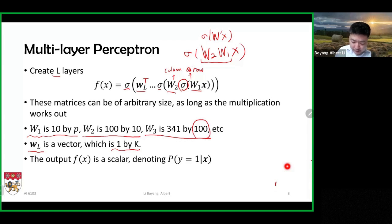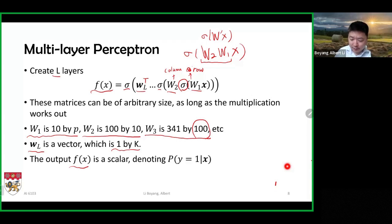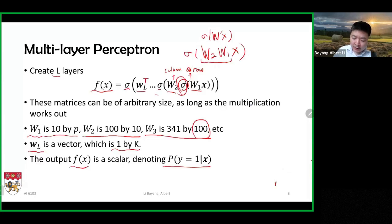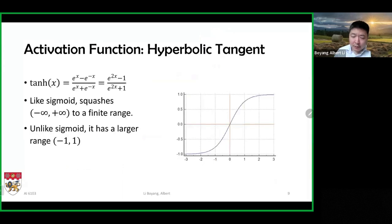If we don't need the output to be a probability, we don't necessarily have to use the sigmoid function. For intermediate layers, we can use arbitrary activation functions. Here we introduce the hyperbolic tangent, written as tanh. The two equivalent forms can be converted by multiplying e^x on numerator and denominator. The output is always in the open interval (−1, 1) — it never exactly reaches −1 or +1 but can approach them.